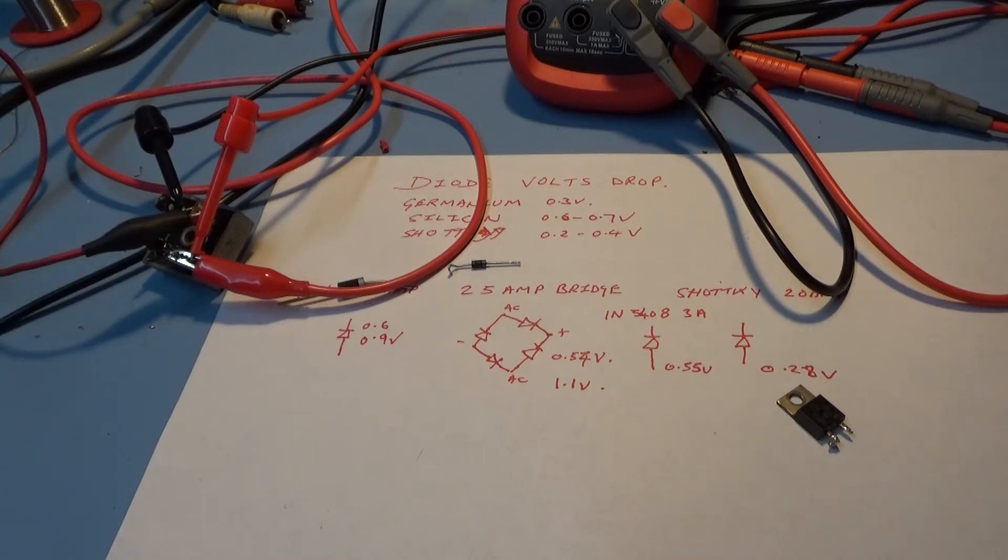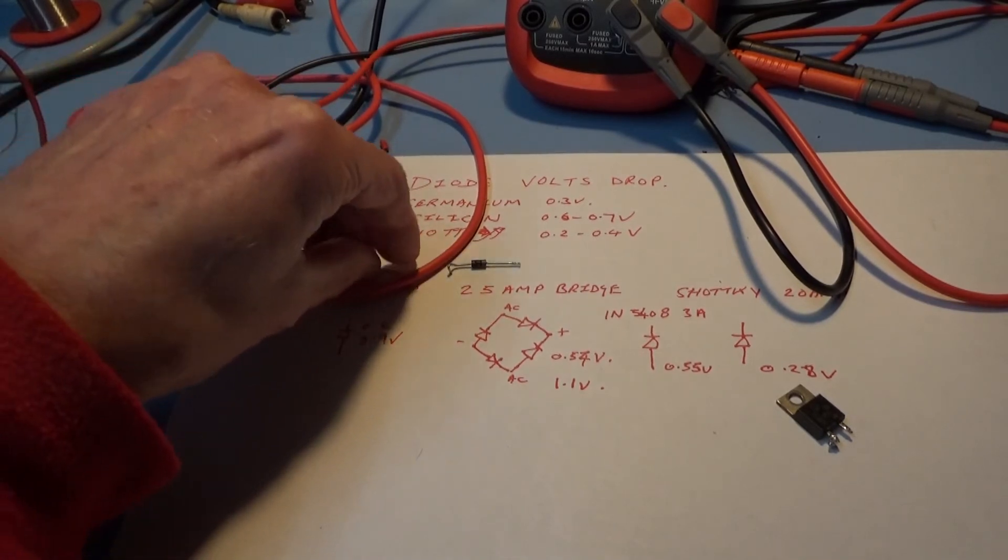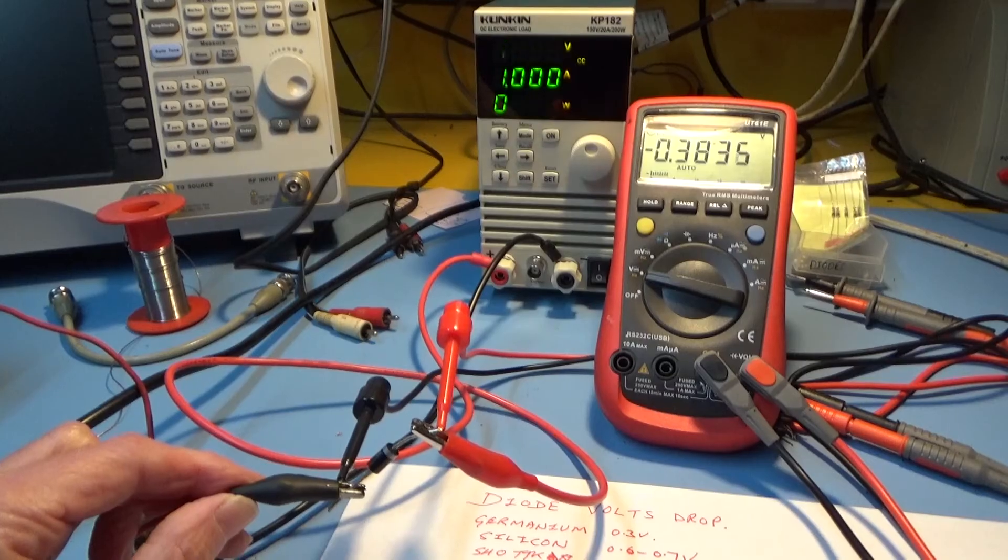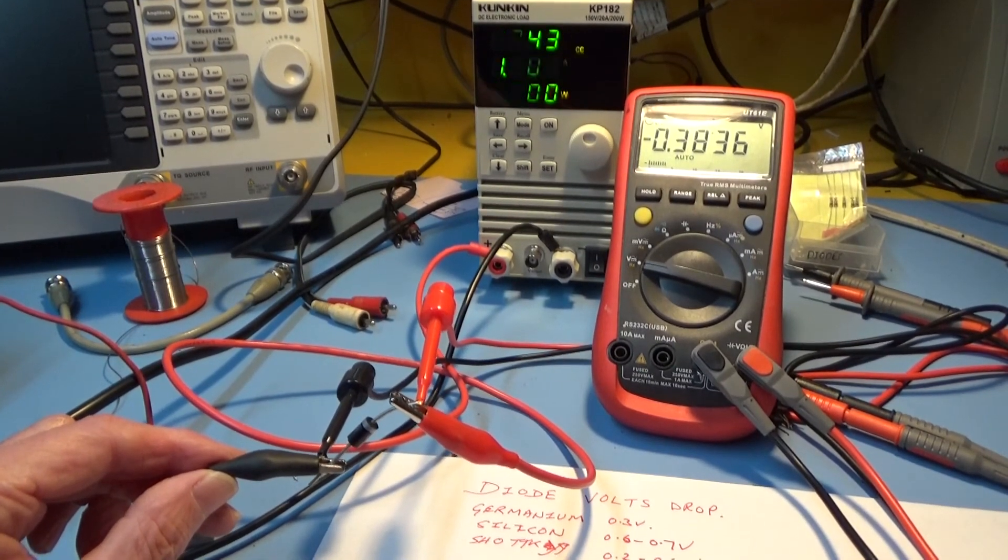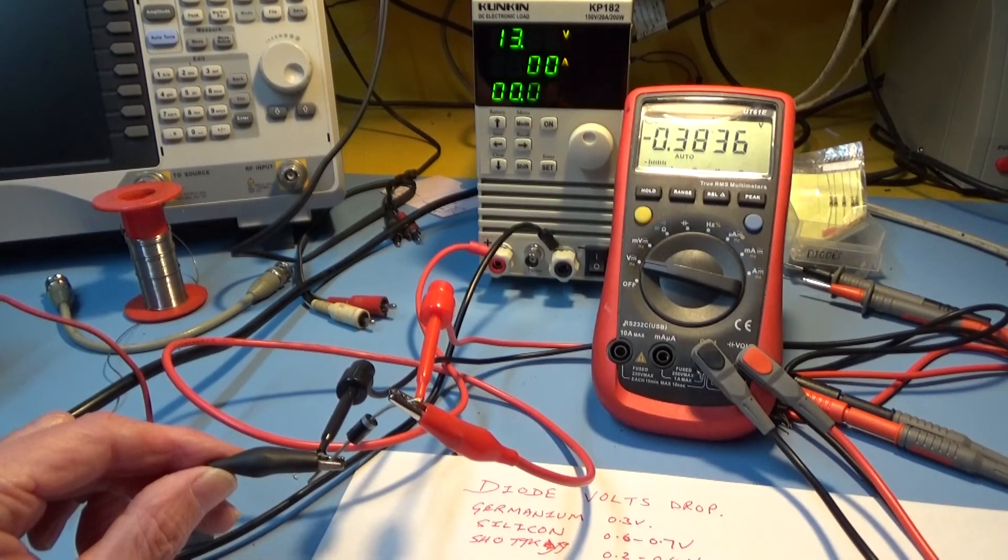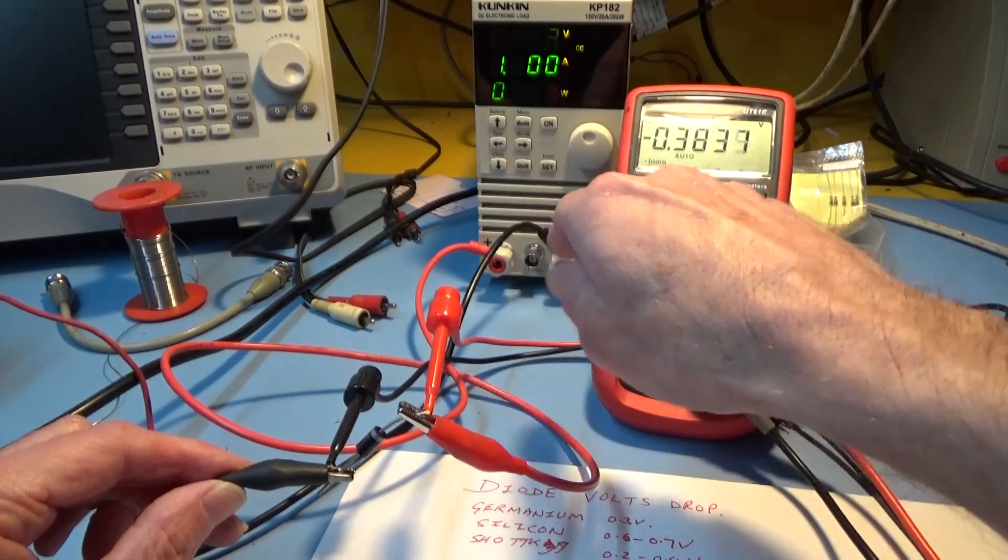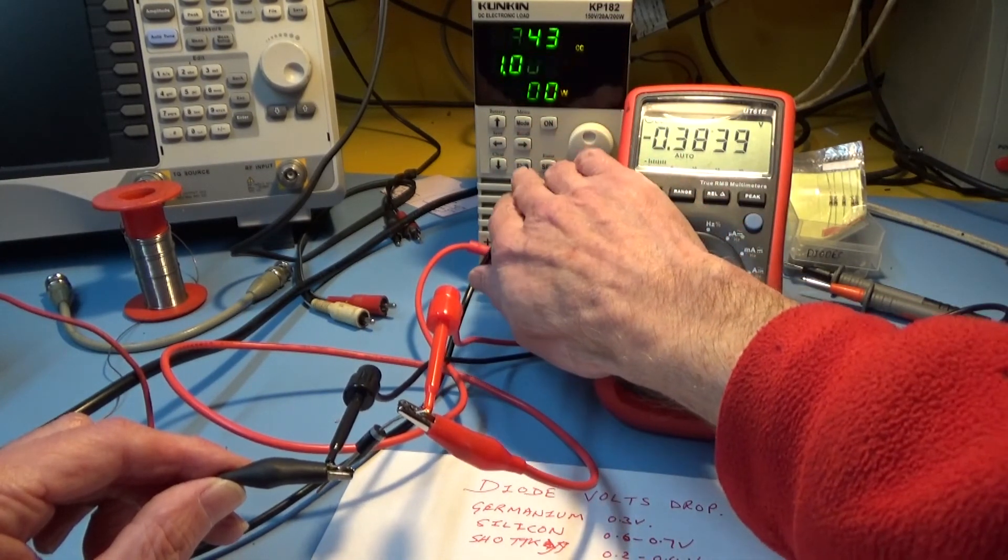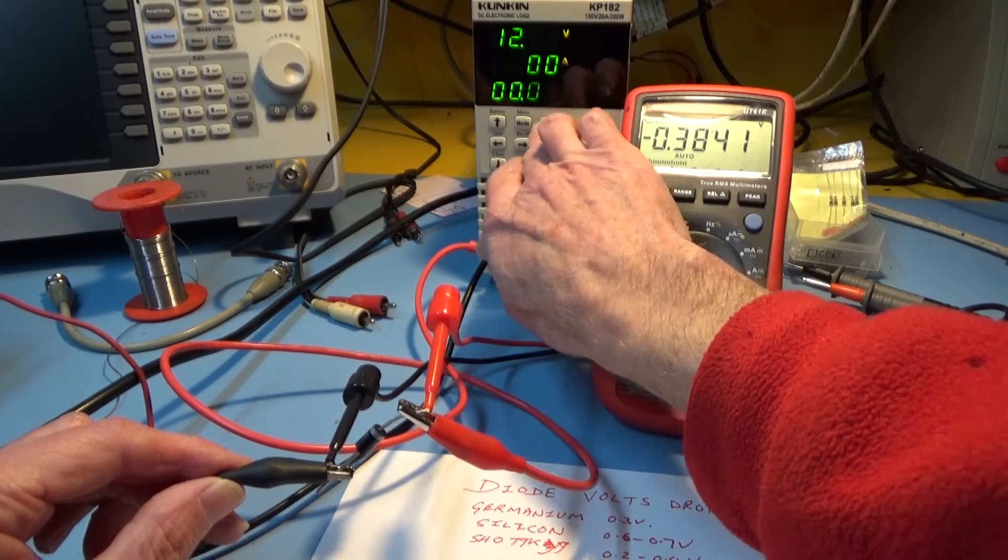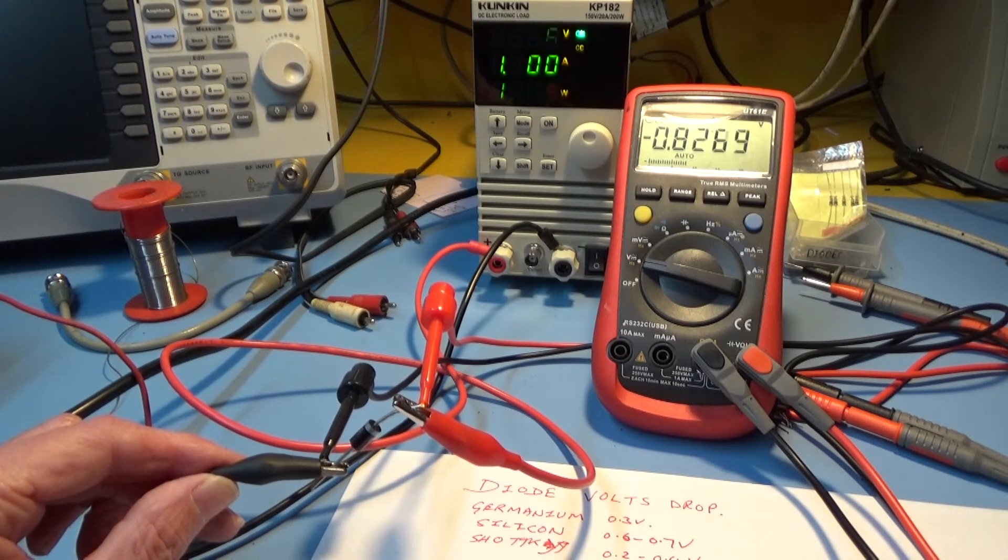Next diode is the 1N5408 which I think is either 3 or 5 amp. I'm going to start it off at 1 amp. You can't see the load properly because of how the display interacts with the camera. Turn that on and I'm already up to 0.83 volts at 1 amp which is a fair bit already.